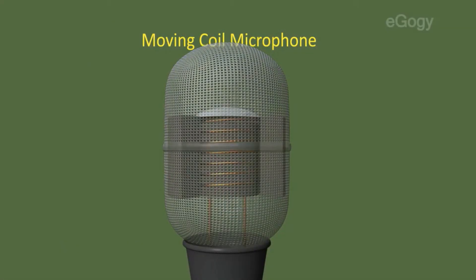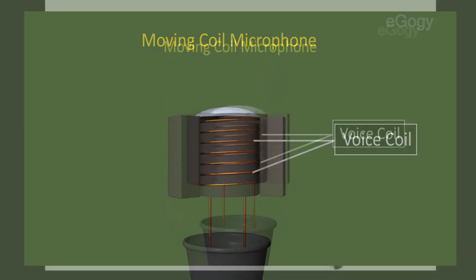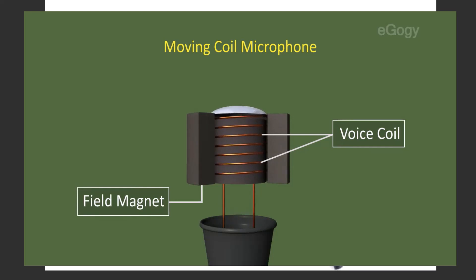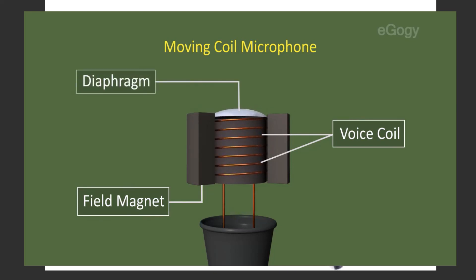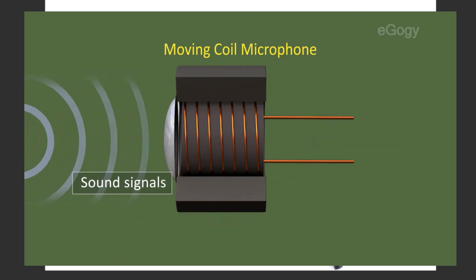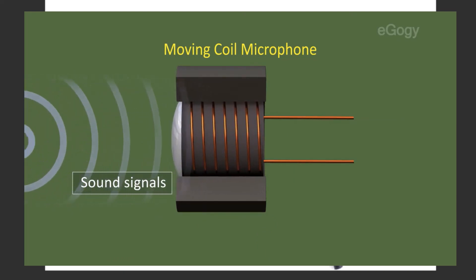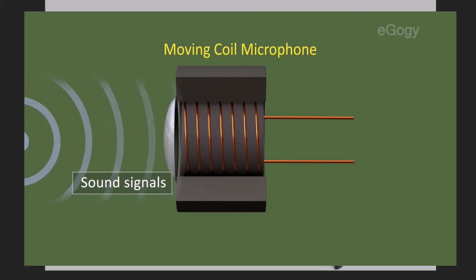Before we get into the list of 10 things, let's very quickly explain what a microphone is. When you're talking or when there's any sound, it's really just a wave going up and down — that's what we hear. A microphone is any device that converts that physical wave going through the air into an electric signal. In technical terms, it's an analog to digital converter.